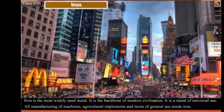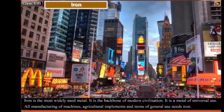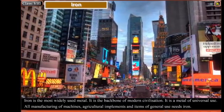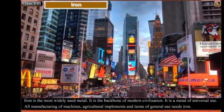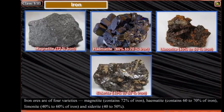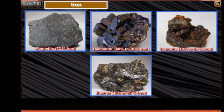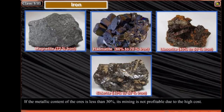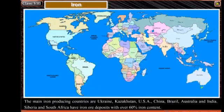Iron is the most widely used metal. It is the backbone of modern civilization and a metal of universal use. All manufacturing of machines, agricultural implements, and items of general use needs iron. Iron ores are of four varieties: Magnetite, containing 72% iron; Hematite, containing 60% to 70% iron; Limonite, containing 40% to 60% iron; and Siderite, containing 40% to 50% iron. If the metallic content of the ore is less than 30%, its mining is not profitable due to the high cost.